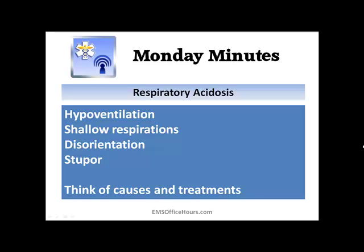What causes respiratory acidosis? Breathing too slowly — hypoventilation, shallow respirations. The patient isn't getting enough air in, and they might become disoriented and even enter a stupor-type state. Think of the causes and treatments: why might patients be breathing too slowly? What might be causing shallow respirations or disorientation? You might get scenarios about patients who are hypoventilating, confused, with shallow respirations.